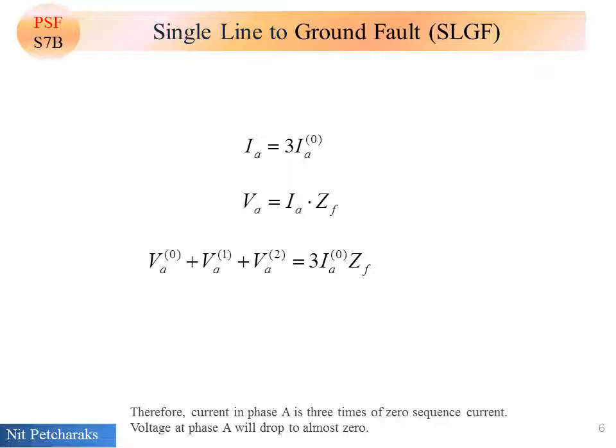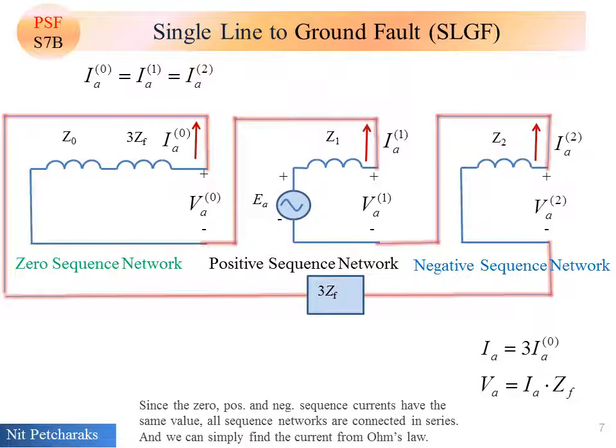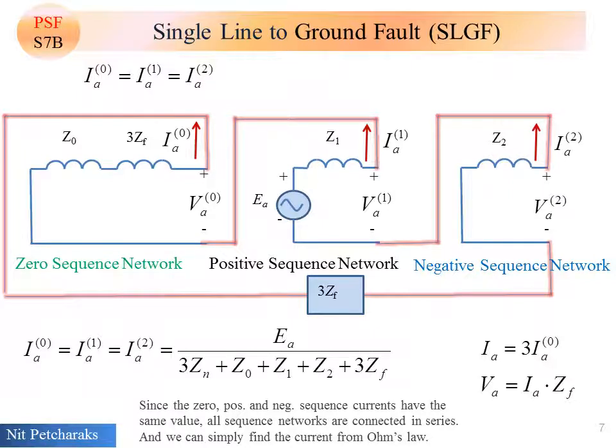Voltage at phase A will drop to almost zero. Since the zero, positive, and negative sequence currents have the same value, all sequence networks are connected in series. And we can simply find the current from Ohm's law.